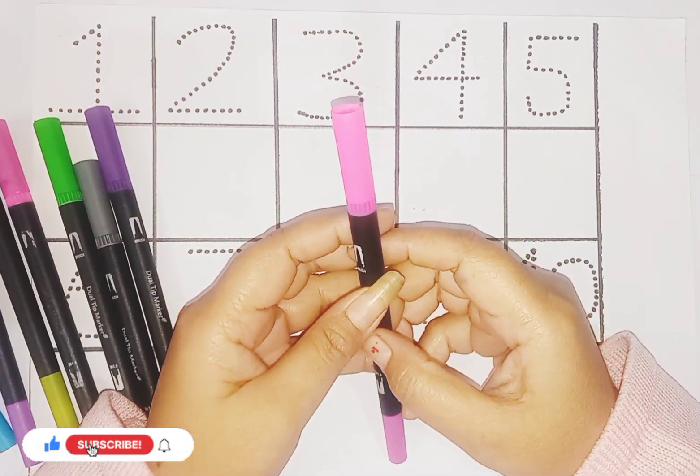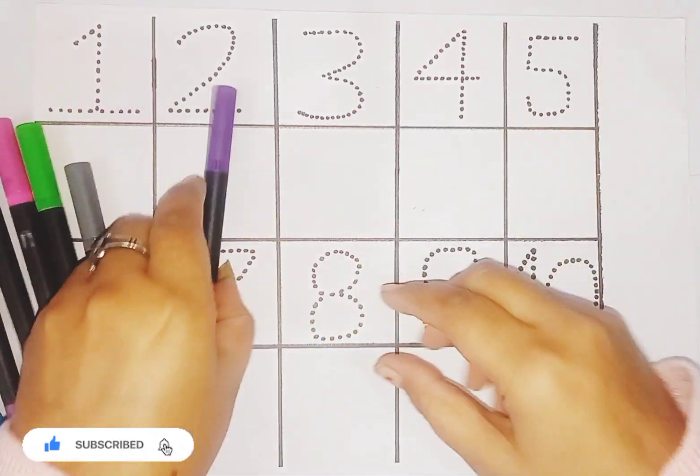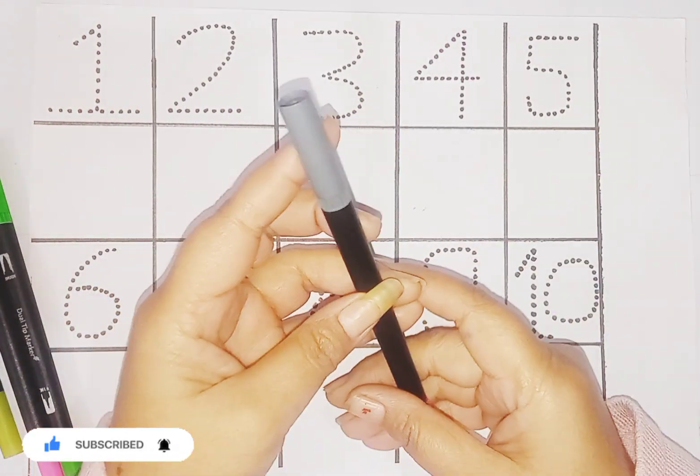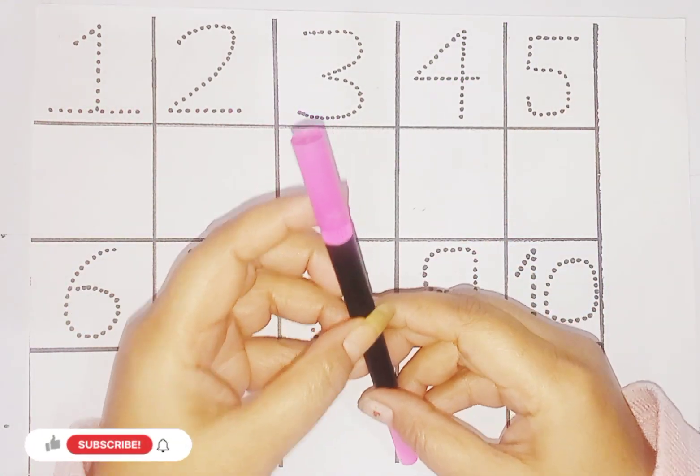This is pink color. Which color kids? Pink color. Purple color. Gray color. Green color. Purple color.